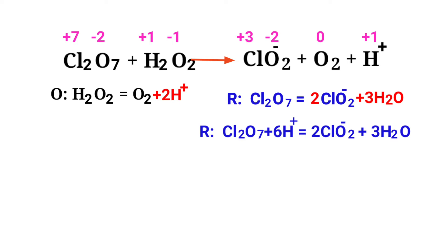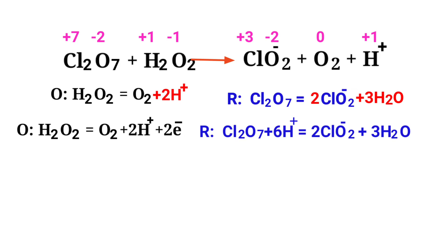For a redox reaction, the addition of charges should be equal on both sides. In the oxidation half-reaction, both sides are not equal. To make them equal, you should add electrons — you cannot add protons, so adding two protons to the left side would be wrong. Instead, add two electrons to the right side to make it equal to zero. Now the charges are equalized in the oxidation half-reaction.